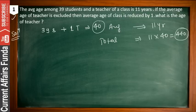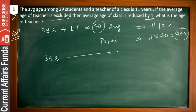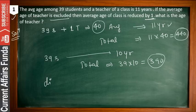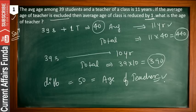The second condition is: if the average age of the teacher is excluded, there are only 39 students and the average age is reduced by 1, so it becomes 10 years. The total is 39 into 10, which equals 390. Take the difference: 440 minus 390 equals 50. So the age of the teacher is 50 years.